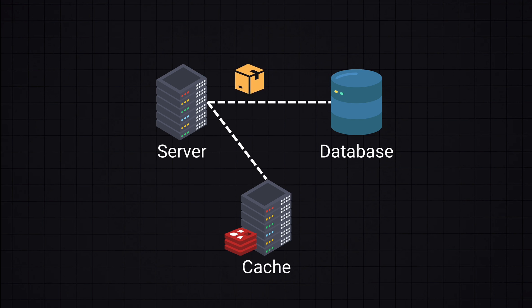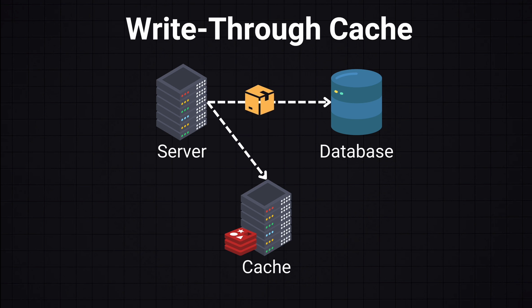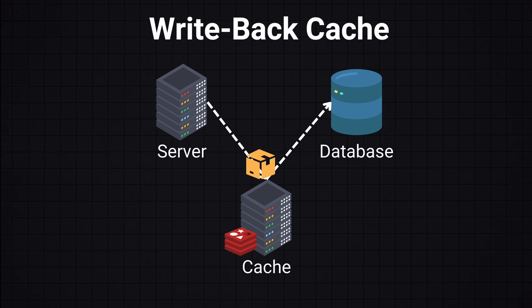If the data is not in the cache, the server retrieves it from the database, returns it to the user, and then stores it in the cache for future requests. This is the case of write-around cache, where data is written directly to permanent storage, bypassing the cache — it is used when write performance is less critical. We also have write-through cache, where data is simultaneously written to cache and permanent storage, ensuring data consistency but being slower. And write-back cache, where data is first written to the cache and then to permanent storage at a later time, improving write performance but risking data loss in case of a server crash.